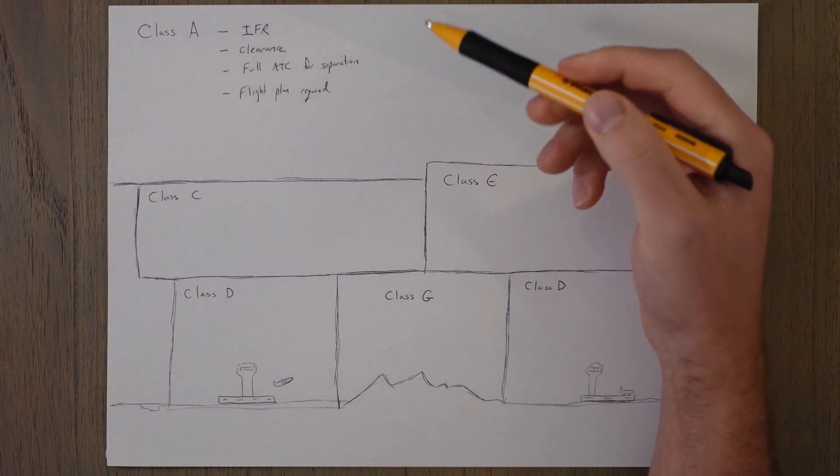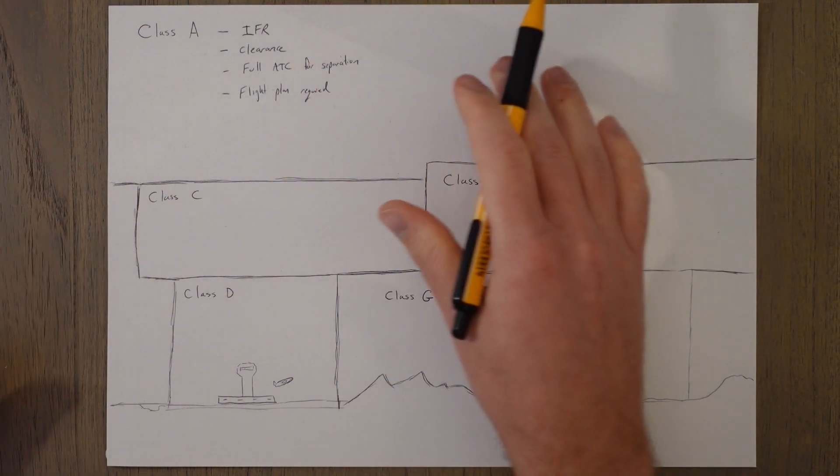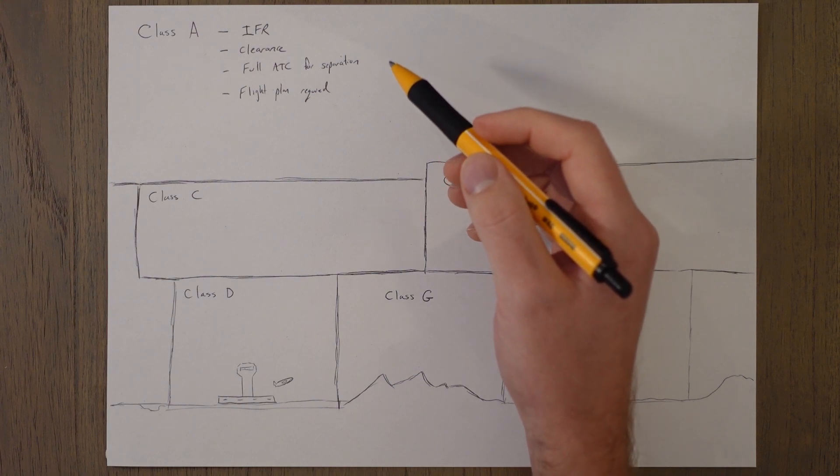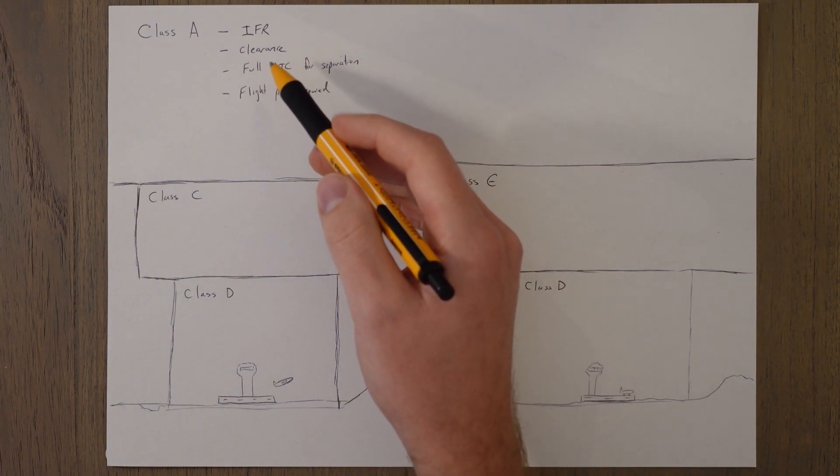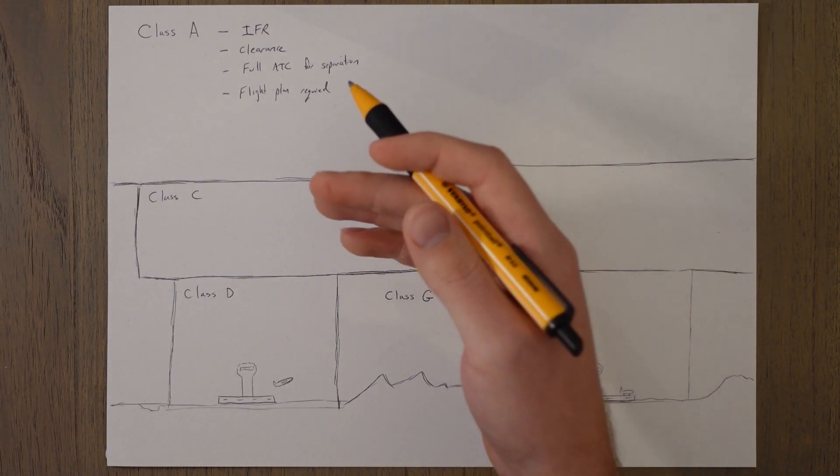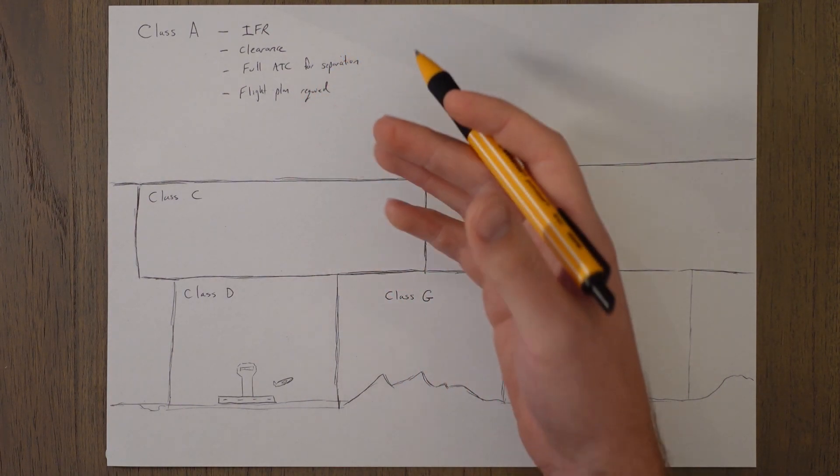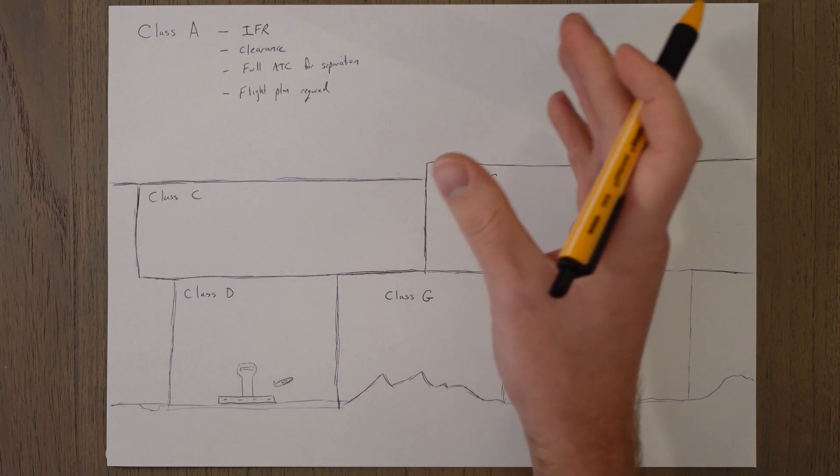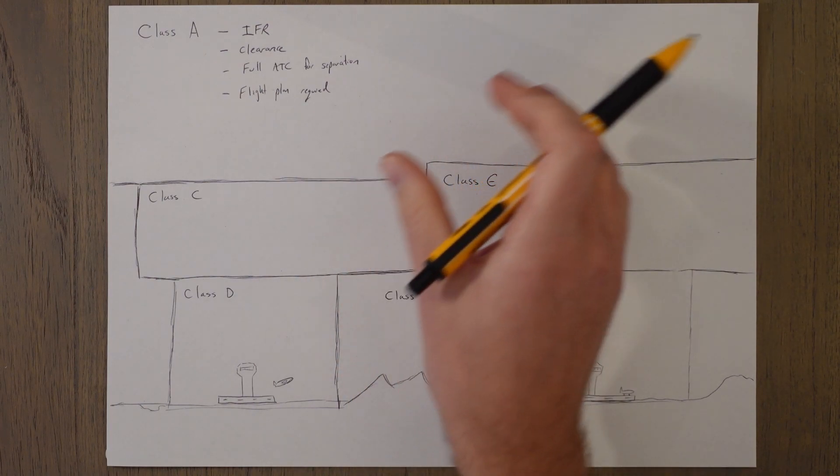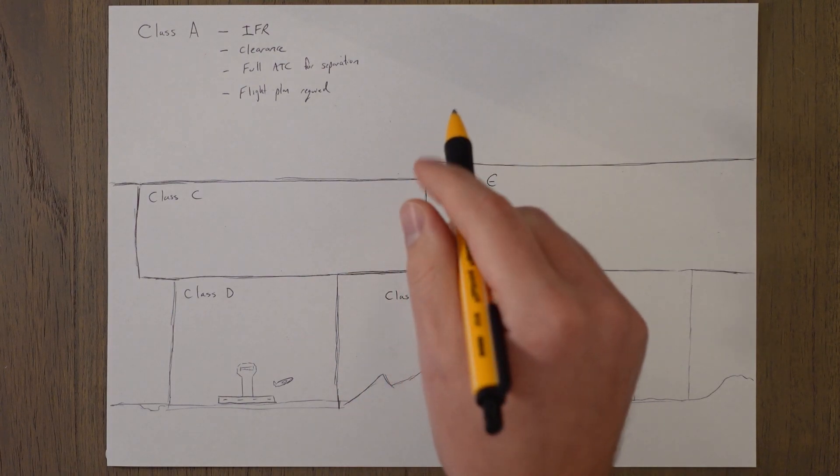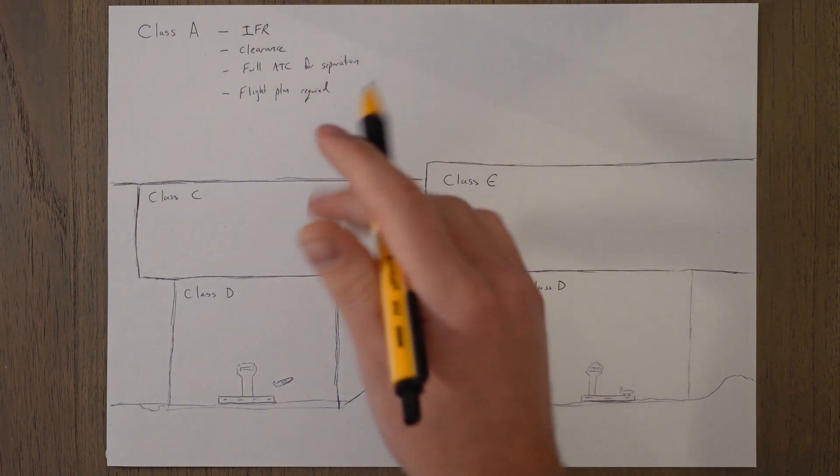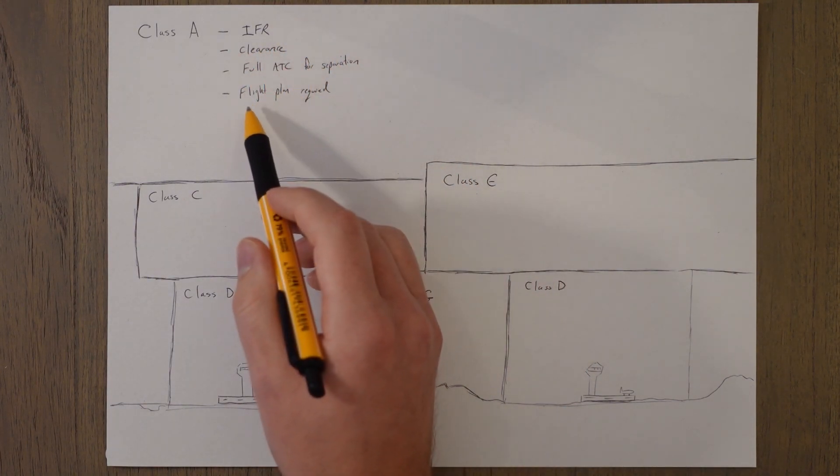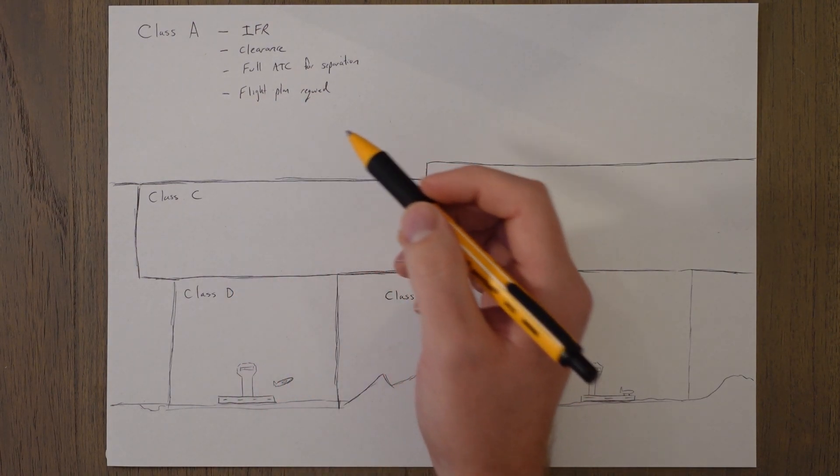So starting off with class A. Class A is IFR only. We don't allow VFR traffic to fly in class A airspace. We need a clearance to enter it because it's fully air traffic controlled and air traffic control will give us separation to other traffic. In this case it's obviously going to be only other IFR traffic and that'll keep us clear of whatever aircraft is in the area. They'll give us vectors or tell us to turn left, turn right, descend, climb to keep us well separated from other aircraft. And because it's a full air traffic control service that we're using we need a flight plan to fly within class A airspace.